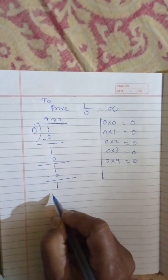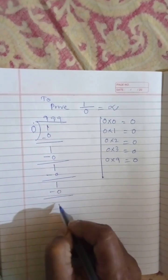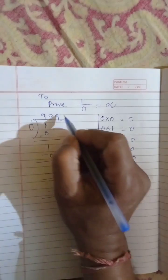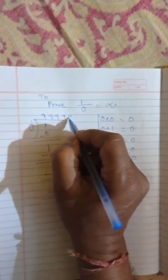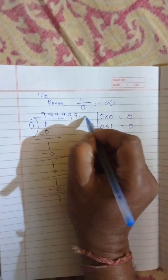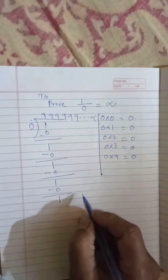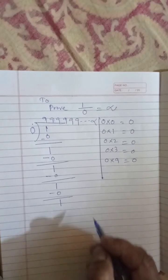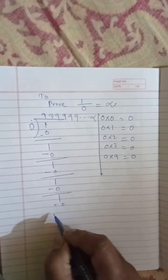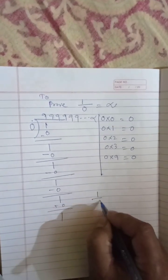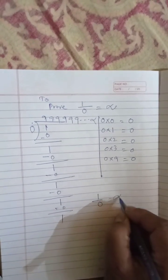Again 1. 0 nines are 0. Again 1. It will continue up to infinity. So from here, we can conclude that 1 divided by 0 is equal to infinity.